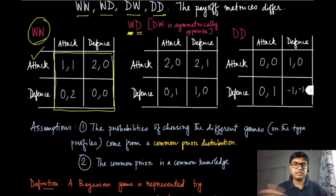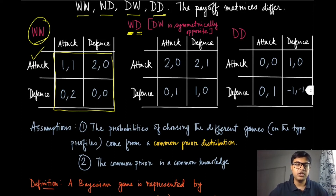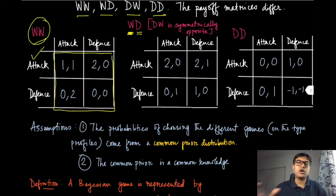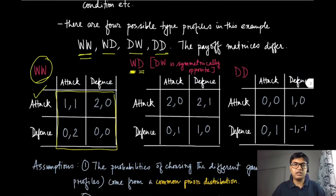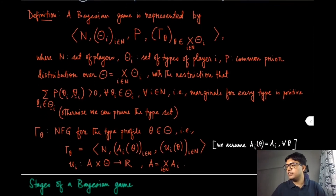Therefore, this game is incompletely known by each player — they do not deterministically know which game they are playing. This differs from previously discussed games where the game matrix or game tree was known to both players beforehand. We will assume that the probabilities of the different games being played are chosen by nature from a common prior distribution over the four type profiles.